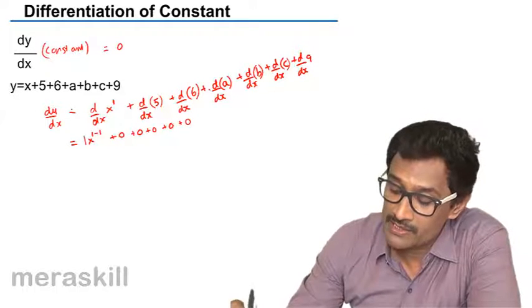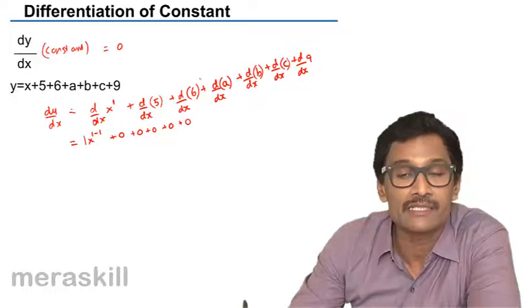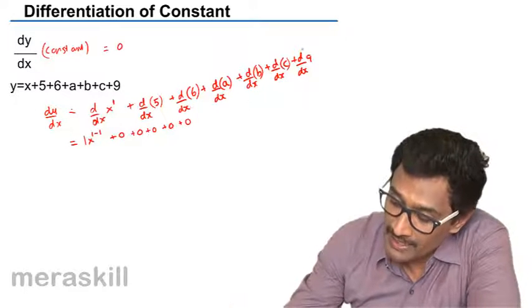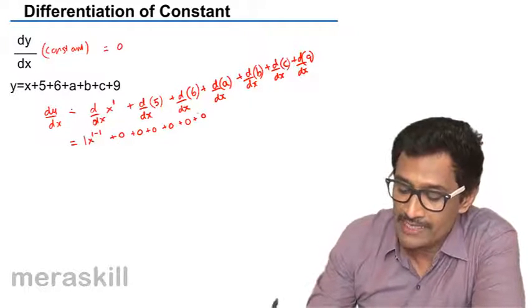Why is that particular thing? Because here there is no x at all - 6 actually means x raised to 0. Then d by dx of 9, that is also 0. So all these add up to 0.